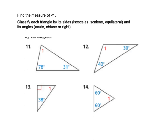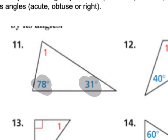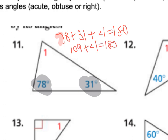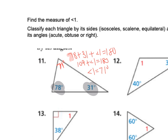On number 11, we have 78 degrees, 31 degrees, and angle 1. We know that all three together have to equal 180, so 78 plus 31 plus angle 1 equals 180 degrees. If we add 78 and 31, we get 109 plus angle 1 equals 180. Subtracting 109 from both sides, angle 1 equals 71 degrees. So we have 71, 78, and 31 — those are all acute angles, and they are all different lengths, so they would be scalene.